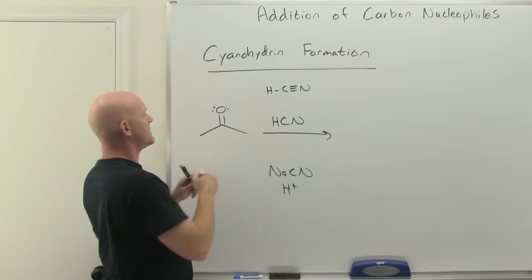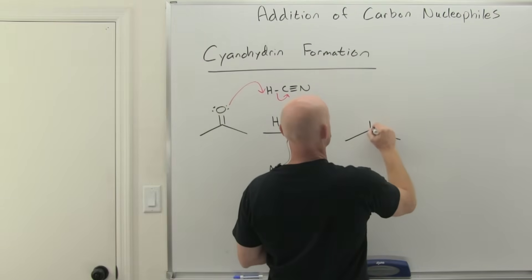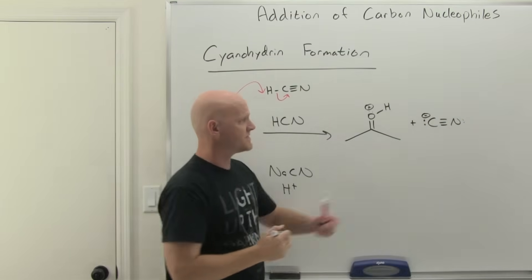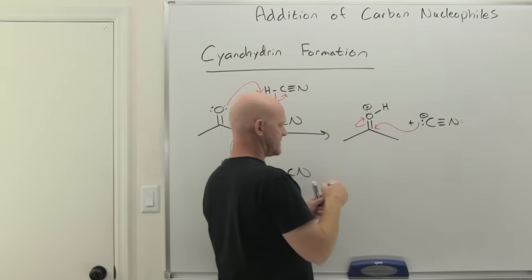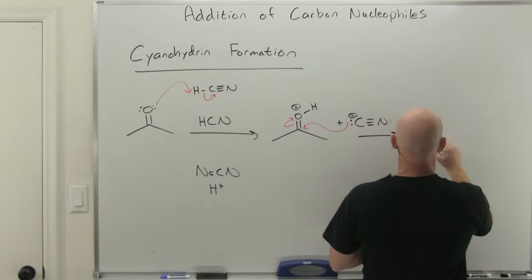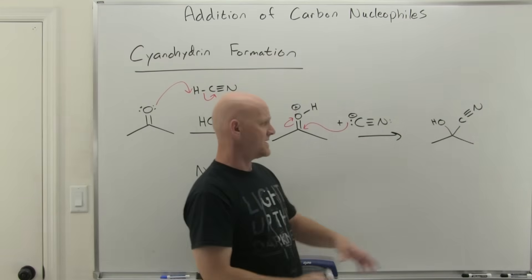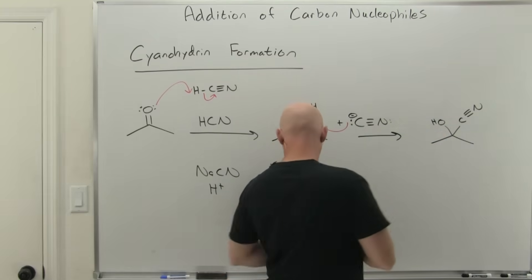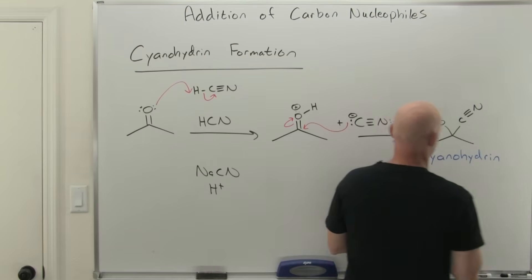So the way this works, we're actually going to protonate our ketone in this case. And then we'll have our cyanide ion. And that cyanide ion is just going to come back and do nucleophilic attack. Push those pi electrons up. And get us this guy. And this guy is your cyanohydrin. When the same carbon's bonded both to the cyanide group and hydroxyl group, that's what we term cyanohydrin.